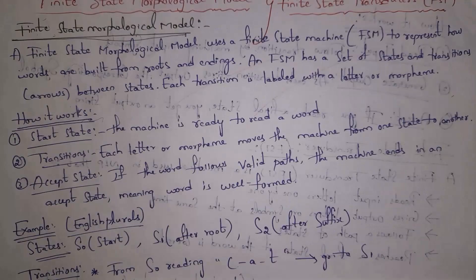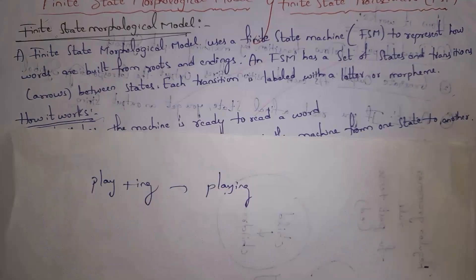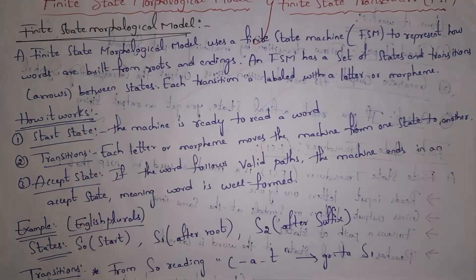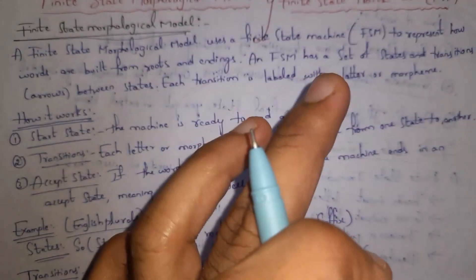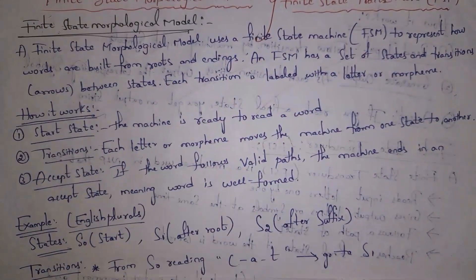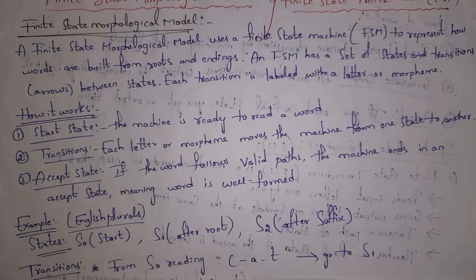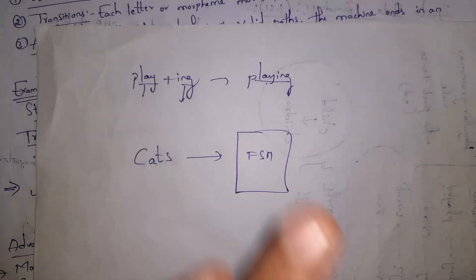Next, the finite state morphological model. This model uses a finite state machine to represent how words are built from roots and endings. A finite state machine has a set of states and transitions between states, each labeled with a letter or morpheme. It has three states: start state, transition state, and accept state. In the start state, the machine is ready to read a word; in the transition state, it reads each letter one by one; in the accept state, if the word follows a valid path, it is accepted, otherwise rejected.